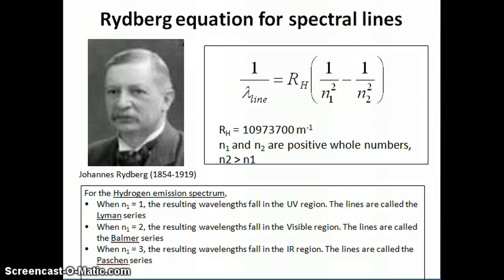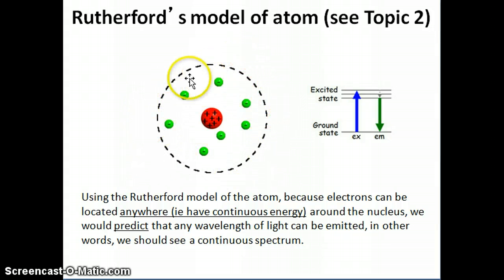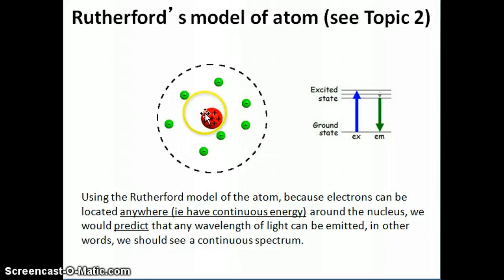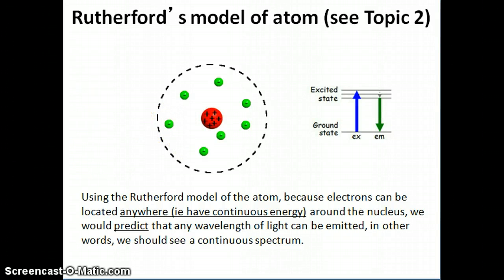What we want to do now is talk about what models can help us explain the importance of the Rydberg equation. The most advanced model of the atom at the time was Rutherford's model, which we discussed in topic two when we talked about the discovery of the electron and the nucleus. Rutherford improved upon Thomson's plum pudding model, proposing that the atom has a center nucleus containing positive charges — protons and neutrons — and that electrons surround the nucleus but in no specific location; they can be distributed anywhere around the nucleus.